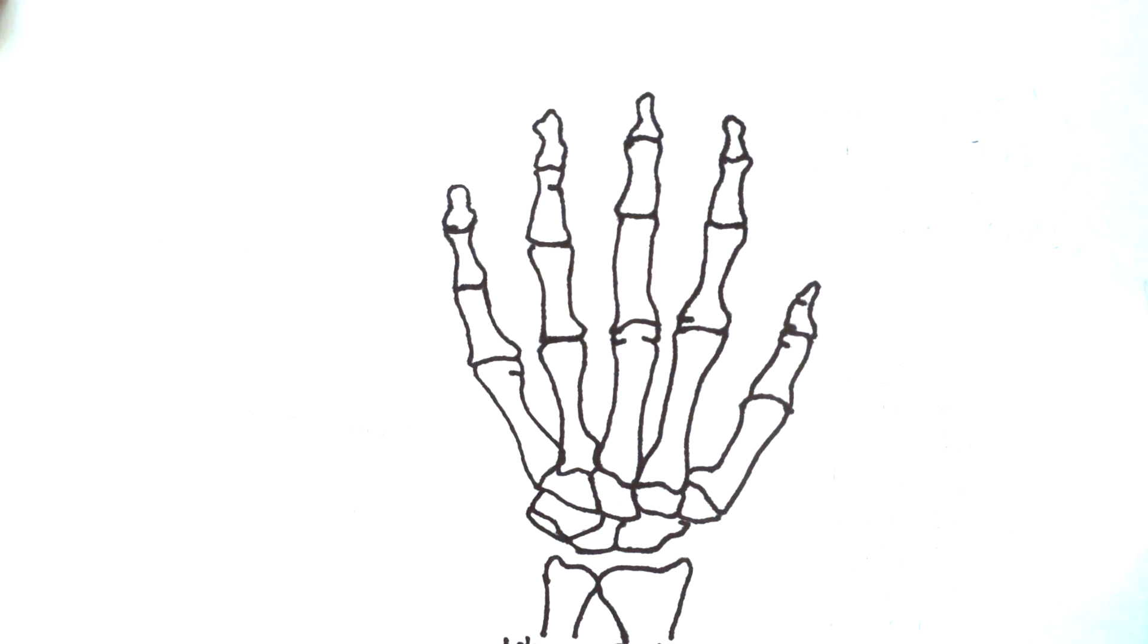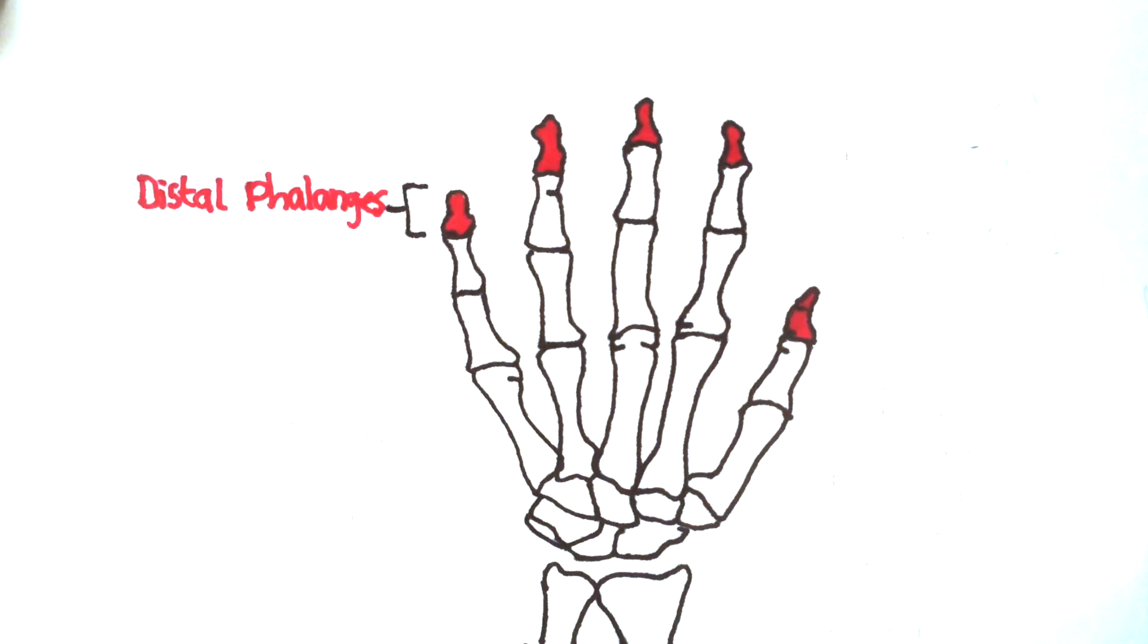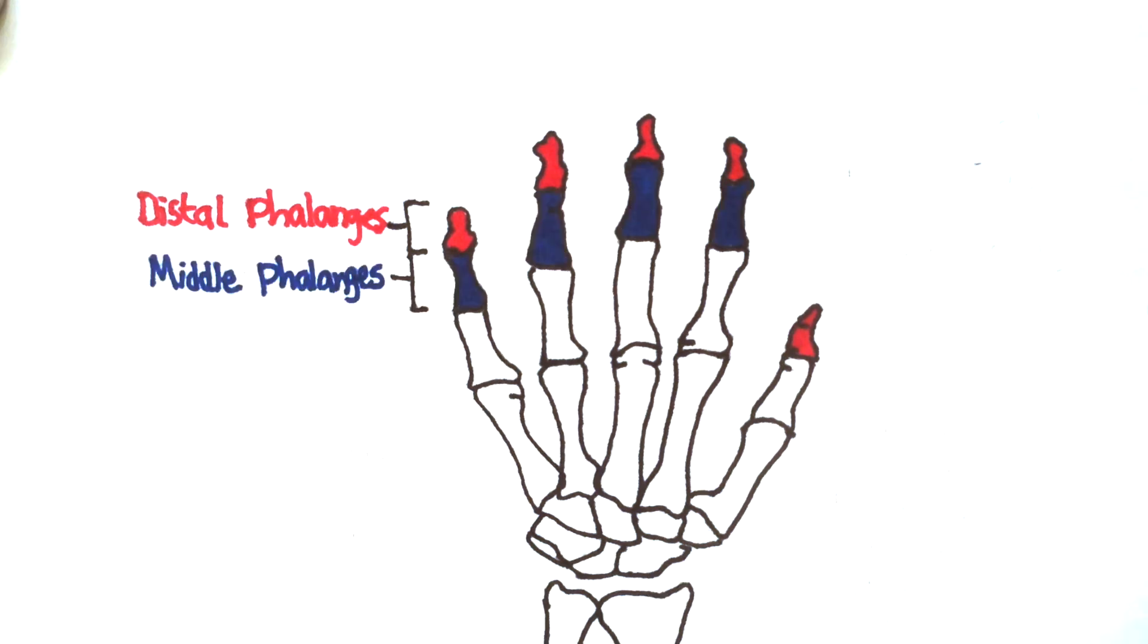The first bones that we're going to take a look at are called the phalanges. We have the distal phalanges at the tip of the fingers, then the middle phalanges, and finally we have the proximal phalanges.